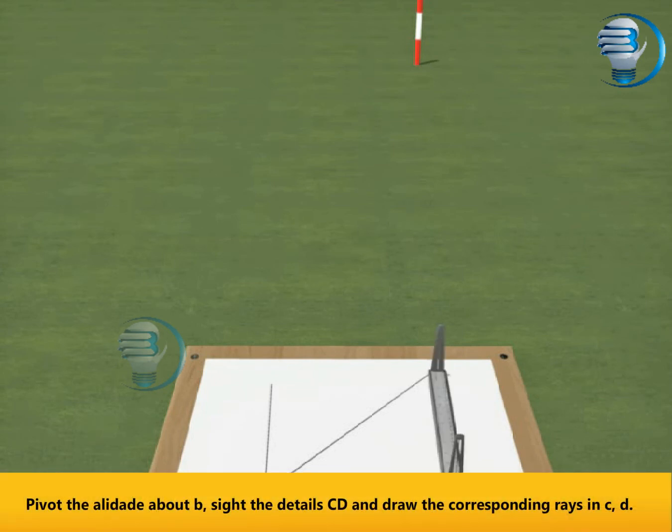Pivot the alidade about B. Sight the details C, D and draw the corresponding rays in C, D.